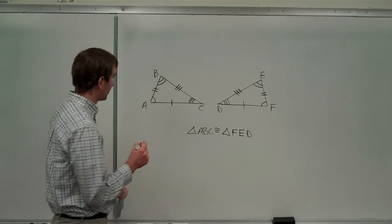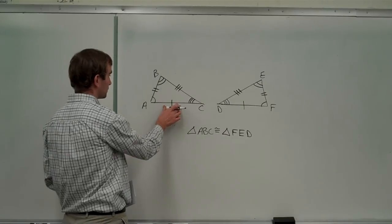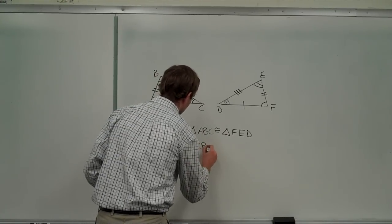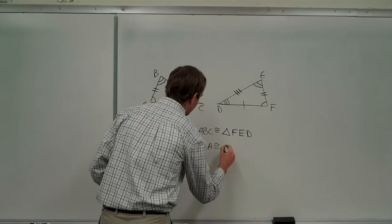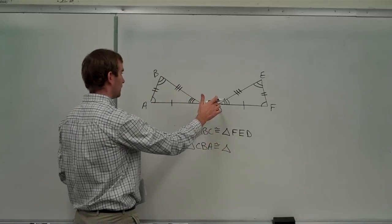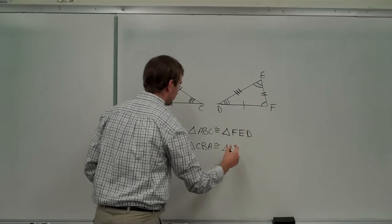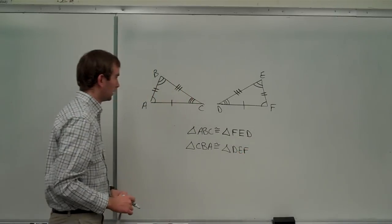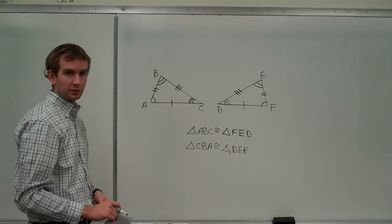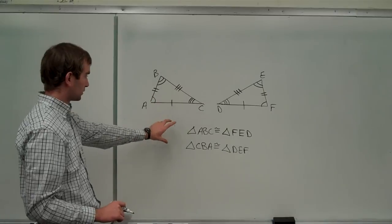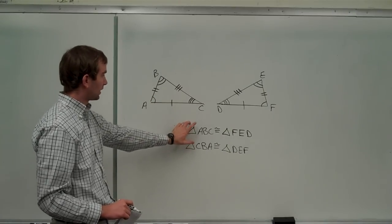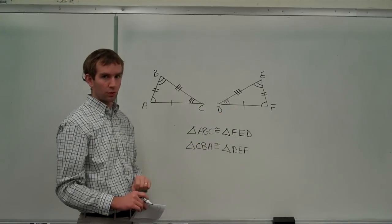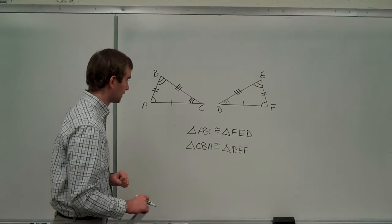I could write it differently, though. I could have started out, I could have called this one triangle CBA. And the corresponding order over on this one would have been DEF. And I could call it something else. Also, there's really no limit on the first one to write down. I just have to make sure that the second one is in the same corresponding order as the first. Hopefully that makes sense.